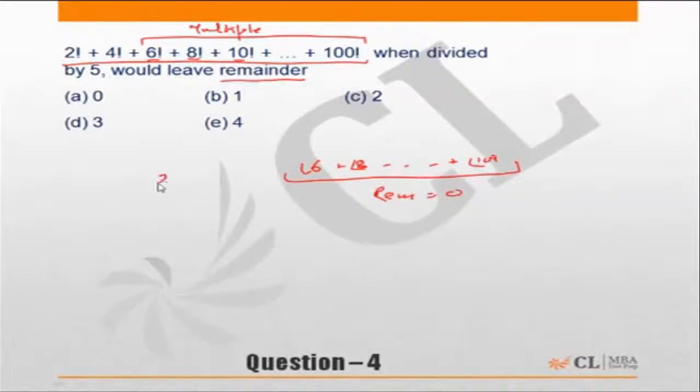In other words, you will get remainder only on the count of two factorial plus four factorial. Two factorial is two, four factorial is twenty four. So when this two factorial plus four factorial of twenty six is divided by five, when you divide by five, twenty six by five, it gives you a remainder of one.